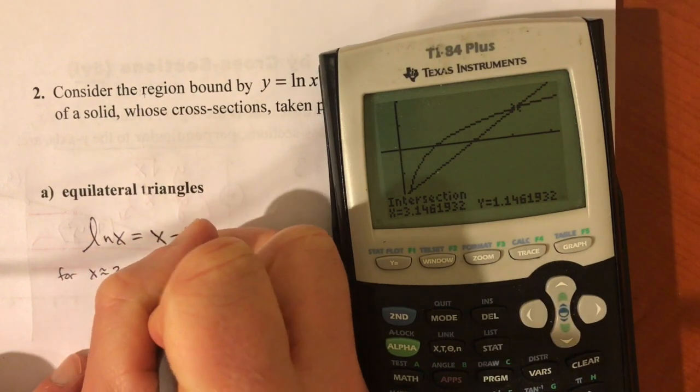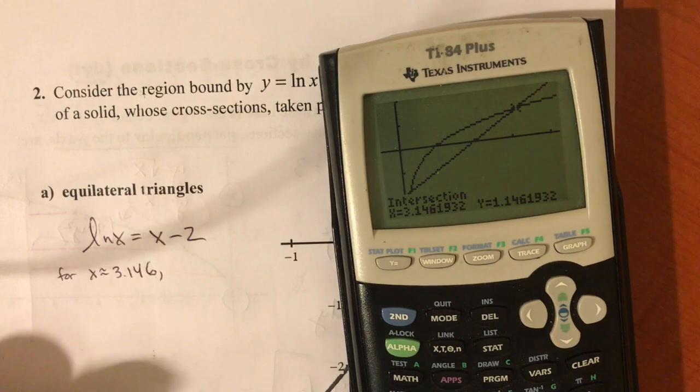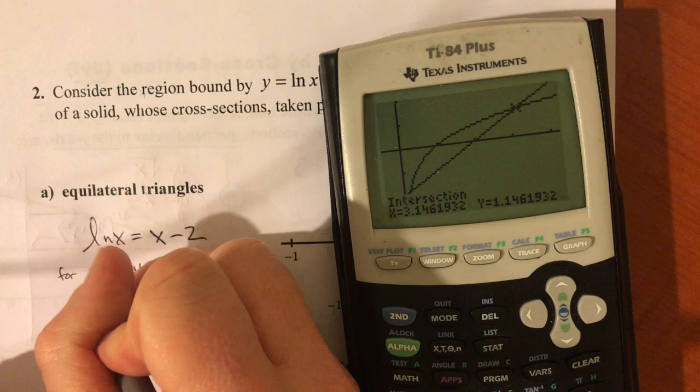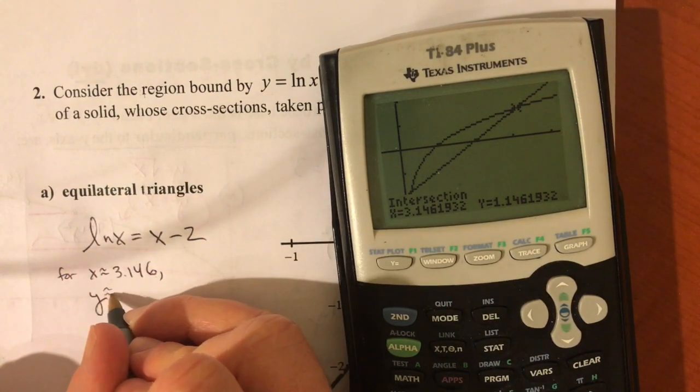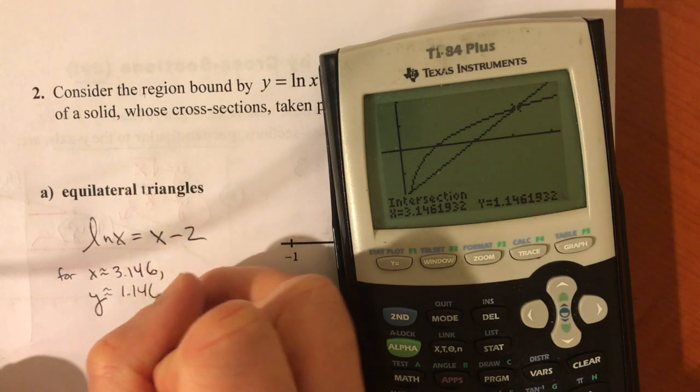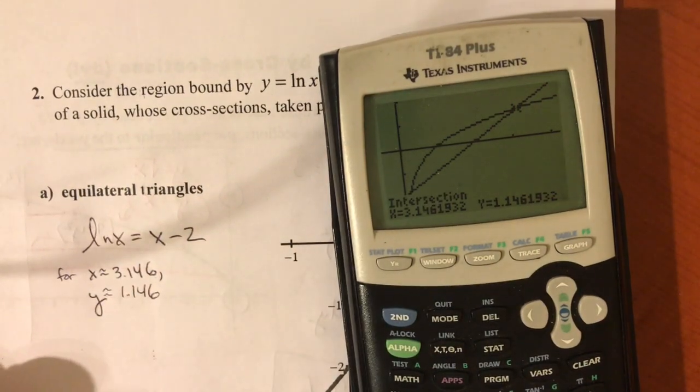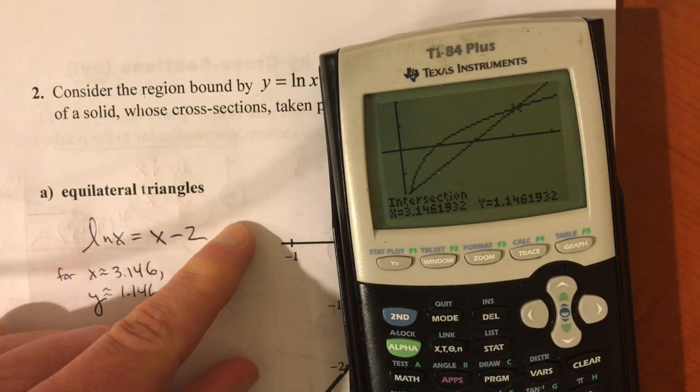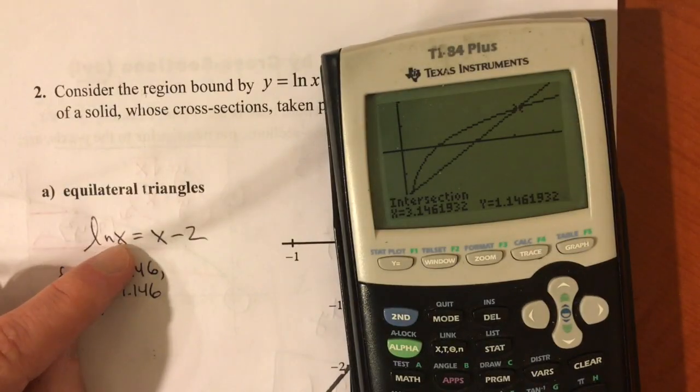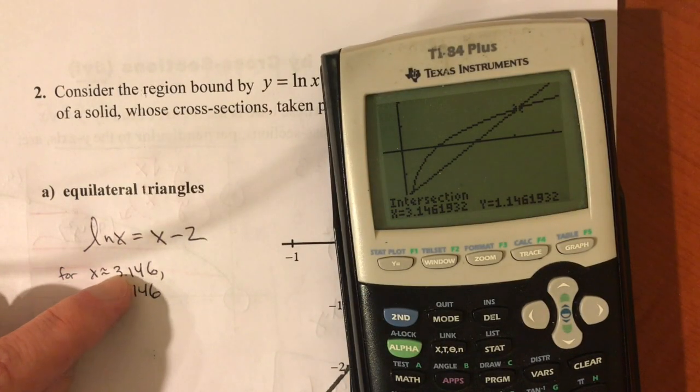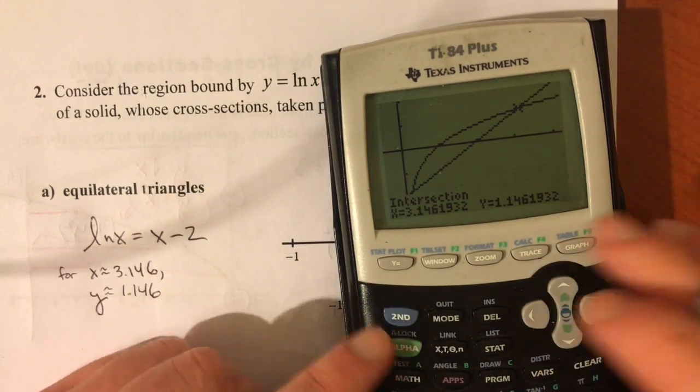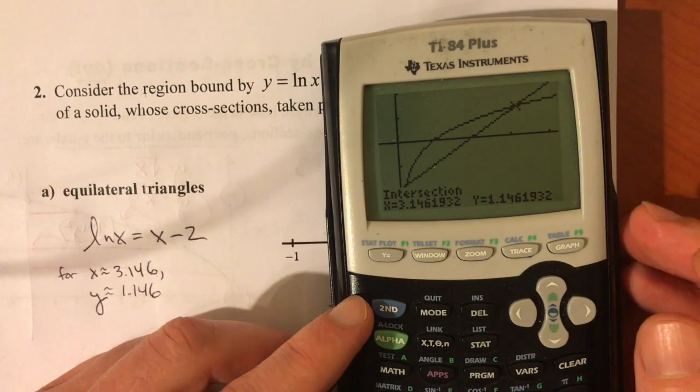But if you're thinking ahead, what we really want are the y values because we're doing this in terms of y. So really, while I'm at it, I'm going to write this x, and that means y is 1.146. Those are really the values I'm after. Unless you would change your equation in terms of y and then solve that one, you can jump right to the y values. But if I write this equation, technically I'm solving for the x values that satisfy it, and the y values come right along with it.